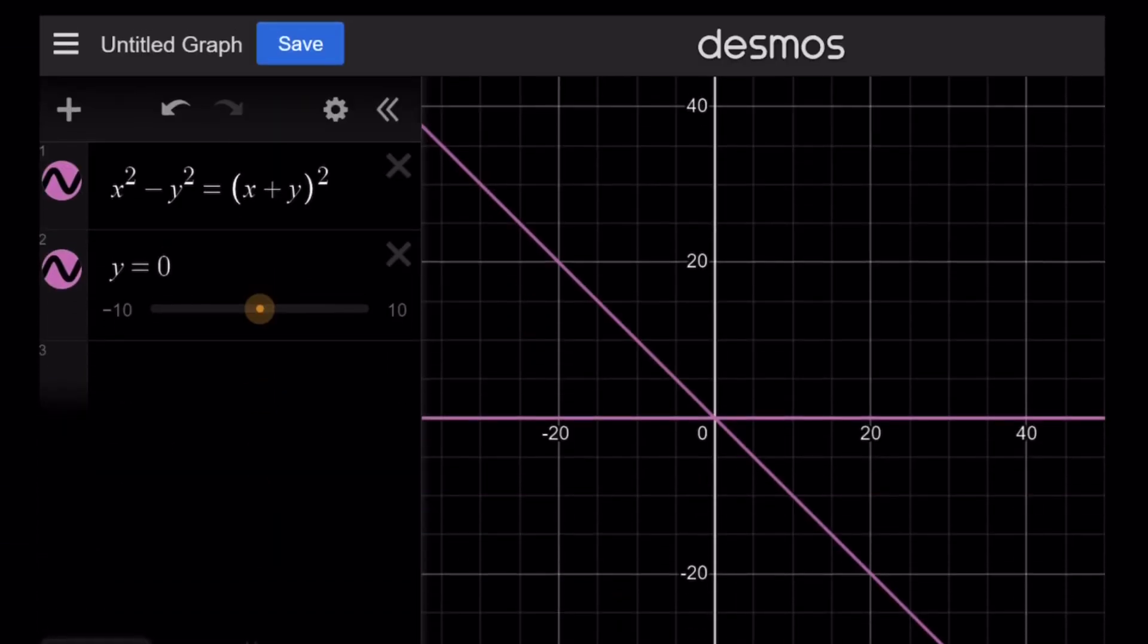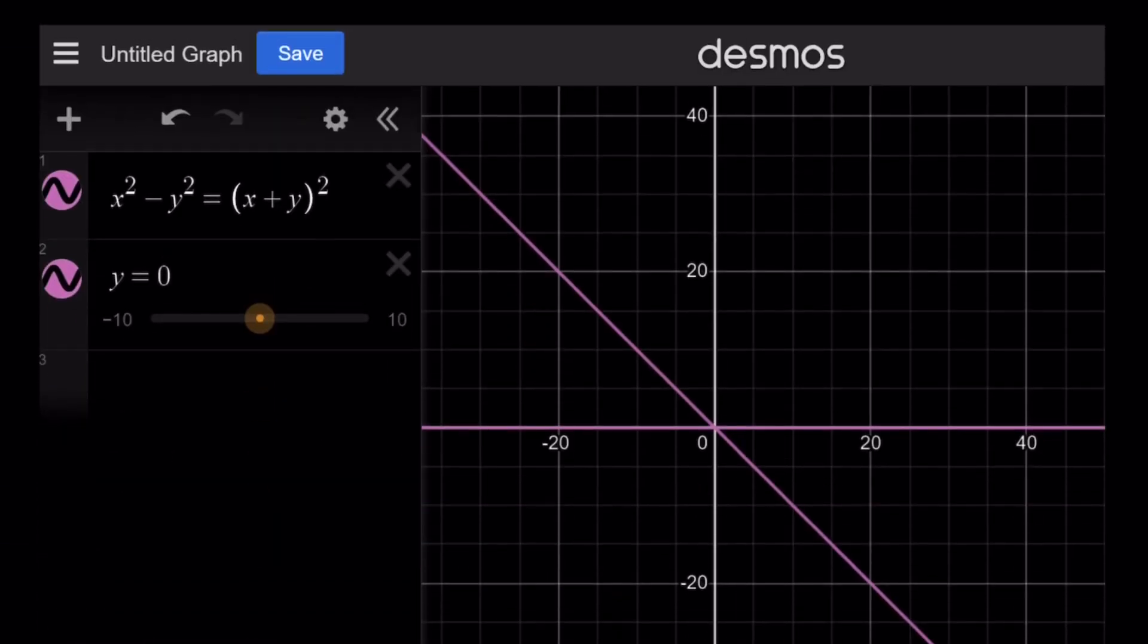And here's the graph of what is going on. Remember, we got y equals 0. By the way, why did I have to graph this separately? Because Desmos did not give me as solutions the points on the x-axis. I do not know why. It doesn't show me the x-axis. It should normally. But anyways, that's why I had to separately do it.